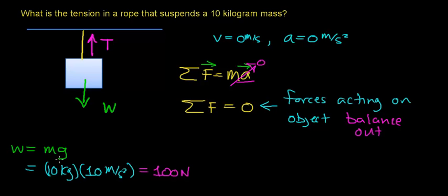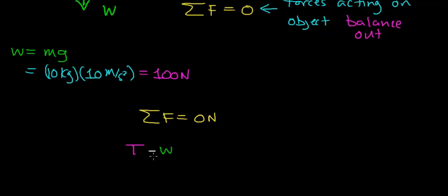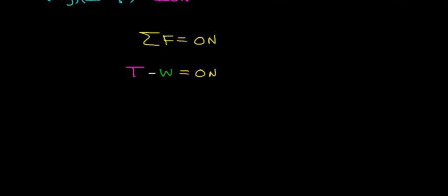The weight of this object is exactly 100 newtons. We're going to use this information and Newton's second law to figure out the tension in the rope. By Newton's second law, the sum of the forces acting on this box equals 0 newtons. There are two forces: the tension force pulling upward, and we subtract the weight force because it is pulling downward. So tension minus weight equals 0 newtons. Since the weight is 100 newtons, we rewrite this as T minus 100 newtons equals 0 newtons.